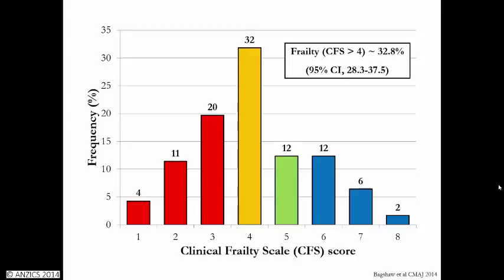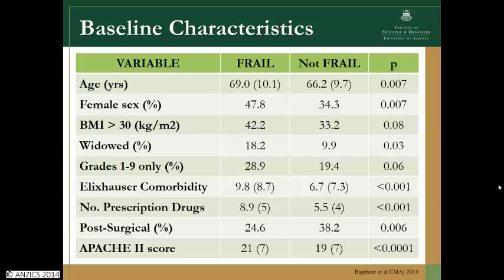Looking at baseline characteristics, frail patients were a bit older, though the age of our cohort was much younger than that reported in prior frailty studies. Frail patients were more likely to be female and more likely to be widowed. They were less likely to have completed higher levels of education, had higher burdens of comorbidities, more prescription drugs, fewer were surgical patients, and their APACHE 2 scores were a little bit higher — probably reflected in the comorbidities and more medical presentations.